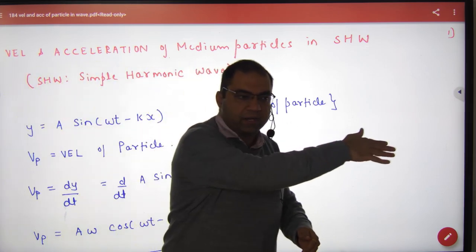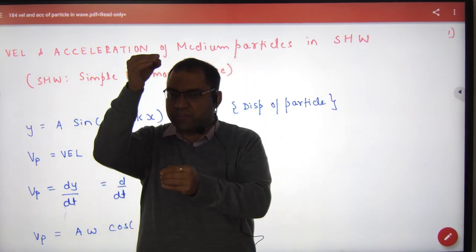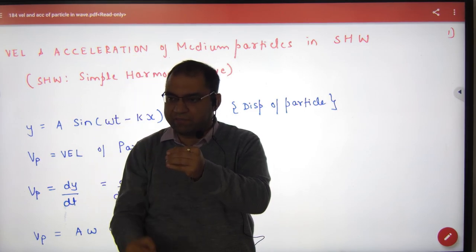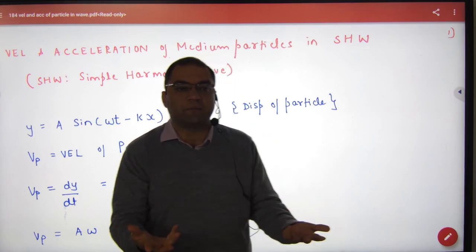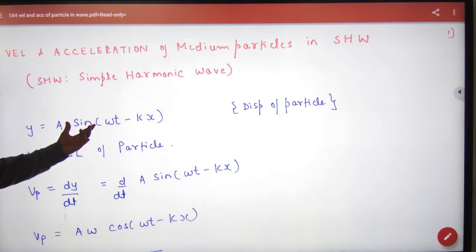When the wave propagates, the velocity at the mean position is 0, then maximum, then 0. At any instant, what is the displacement of the particle? This equation is the displacement wave equation.